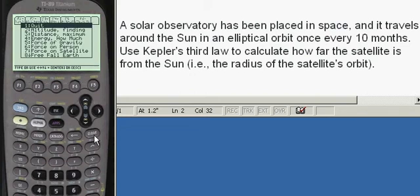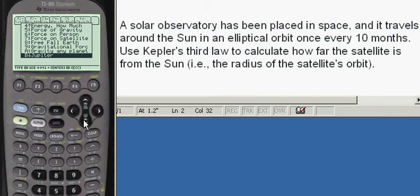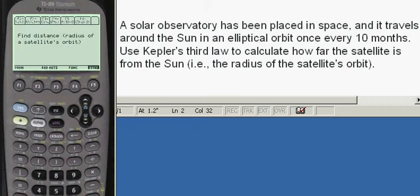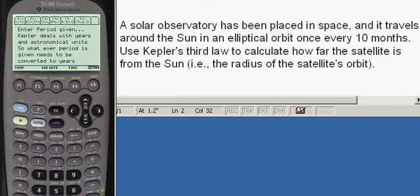So press enter, and now we're going to go down to, they want to know the radius of the satellite's orbit, so we're going to go down here to the R section, of what they ask for. Here's orbital radius. And we're going to find the distance. We're going to enter the period.